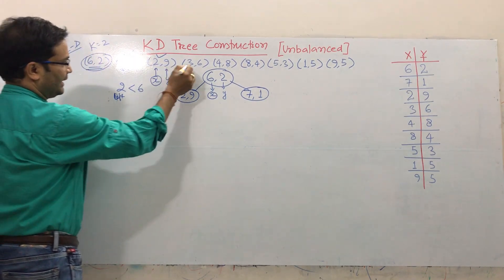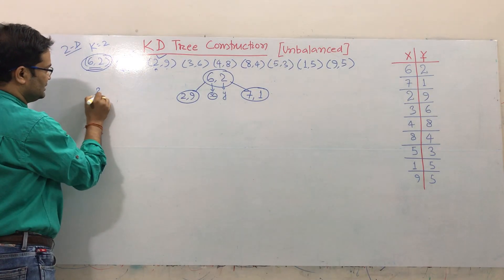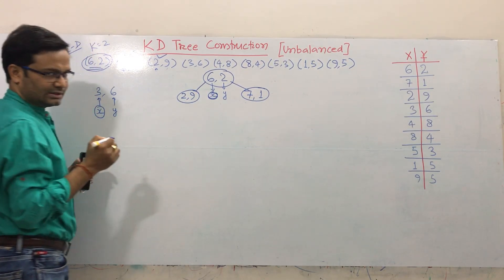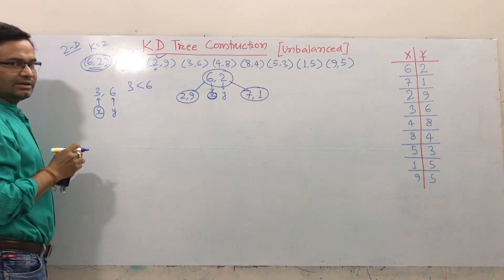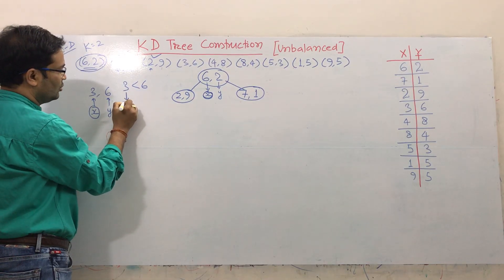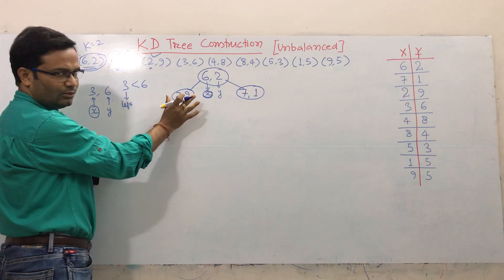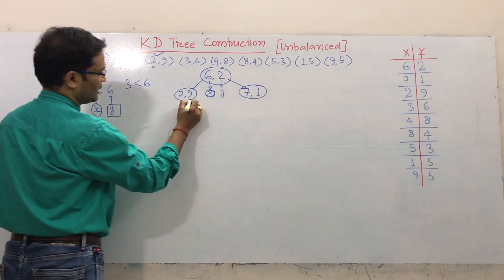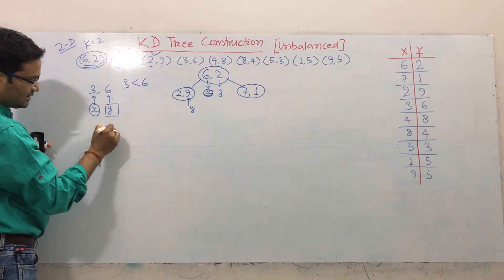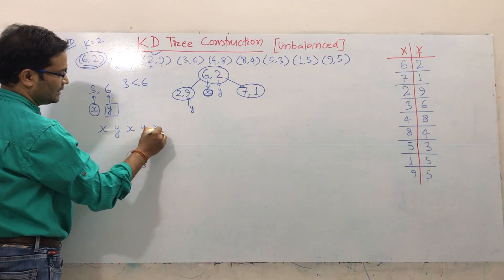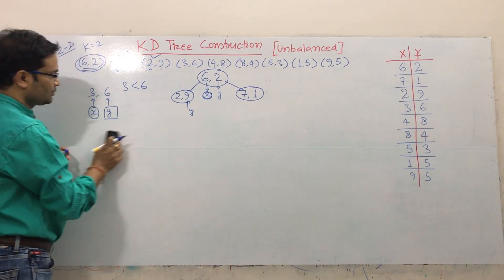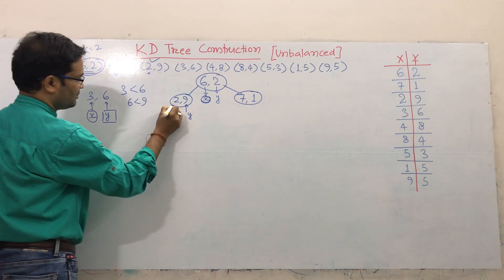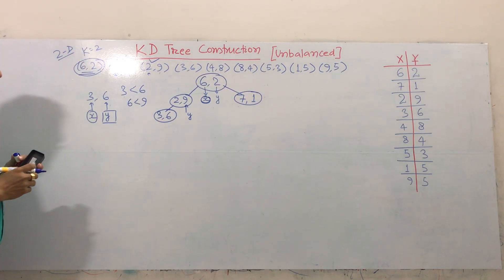Now take the point 3, 6. This is the x, this is the y. Compare this x with the root's x first: 3 and 6 — 6 is greater, so 3 goes left. But we already have one node on the left side. So this time we check the y part. The sequence is: first check x, then y, then x, then y — you should follow this sequence. So compare y=6 with y=9: 6 is less, so this part comes here.